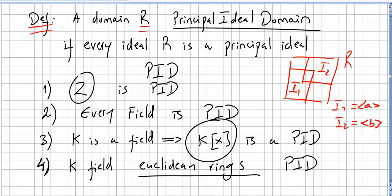It is very easy to check that the ring of integers is a principal ideal domain. Every field is also a principal ideal domain, as we saw in previous videos. And if K is a field, then the ring of polynomials K[x] is a principal ideal domain — this is more or less obvious.